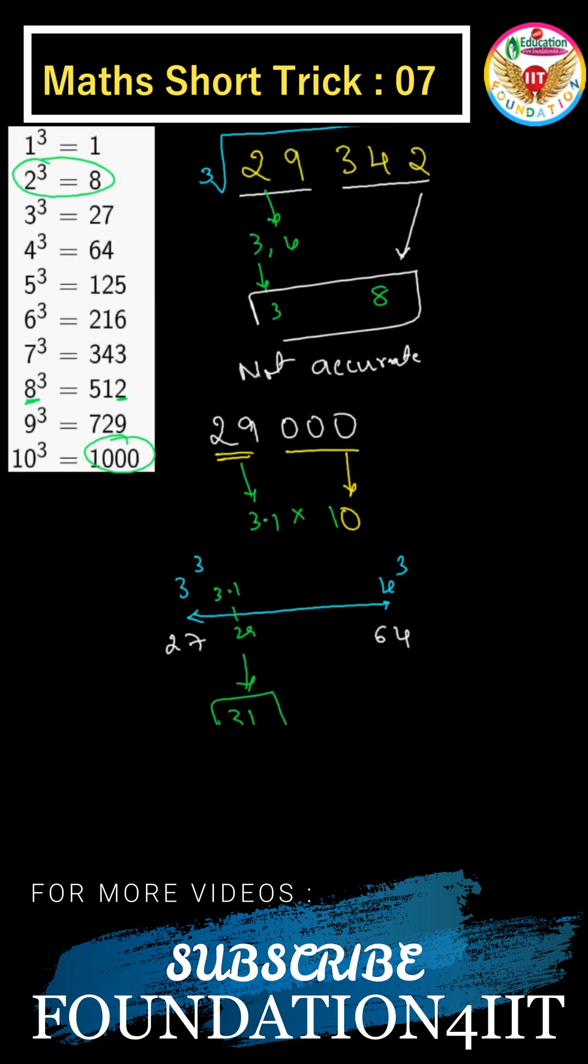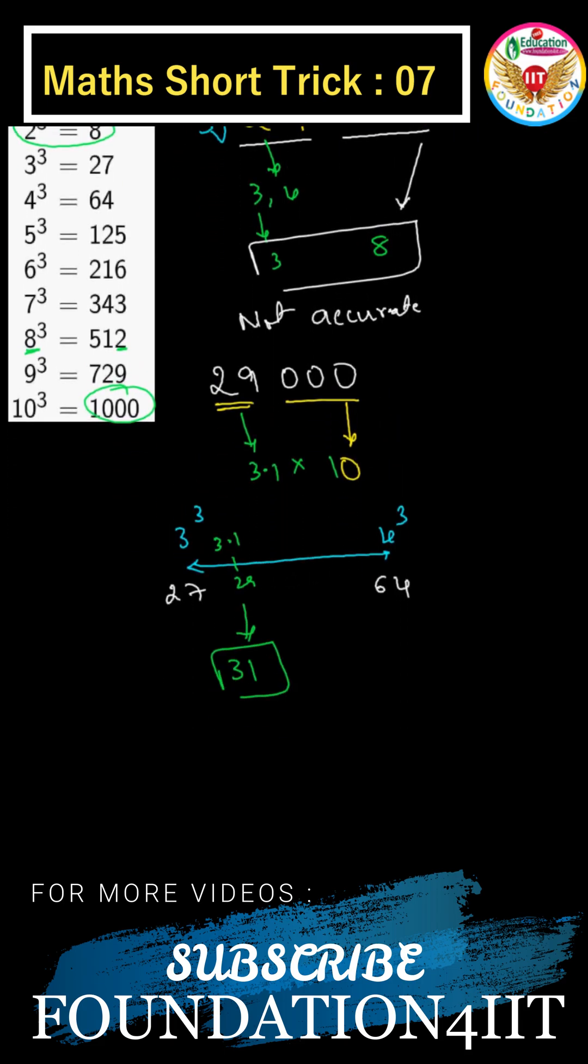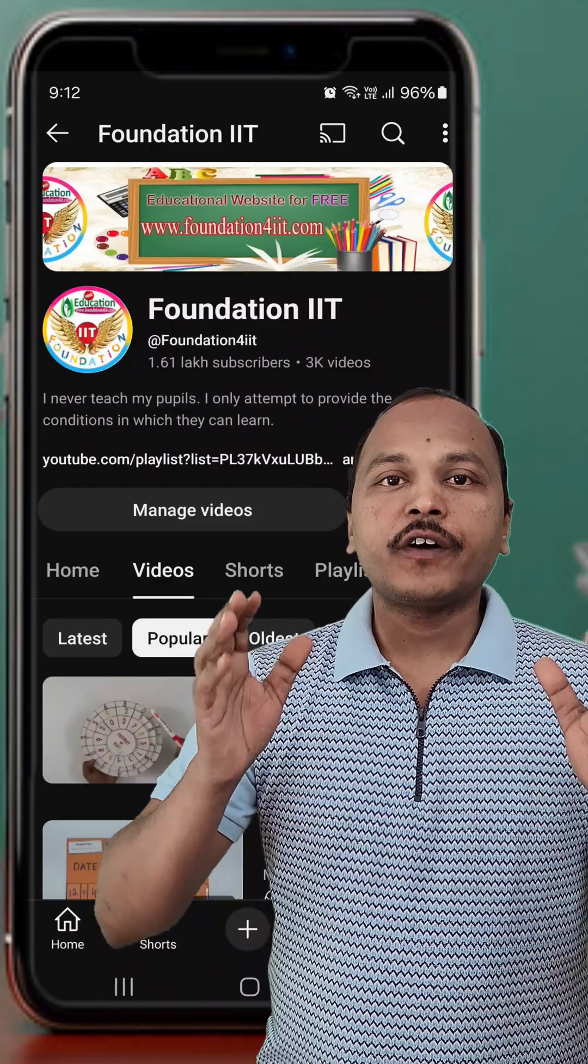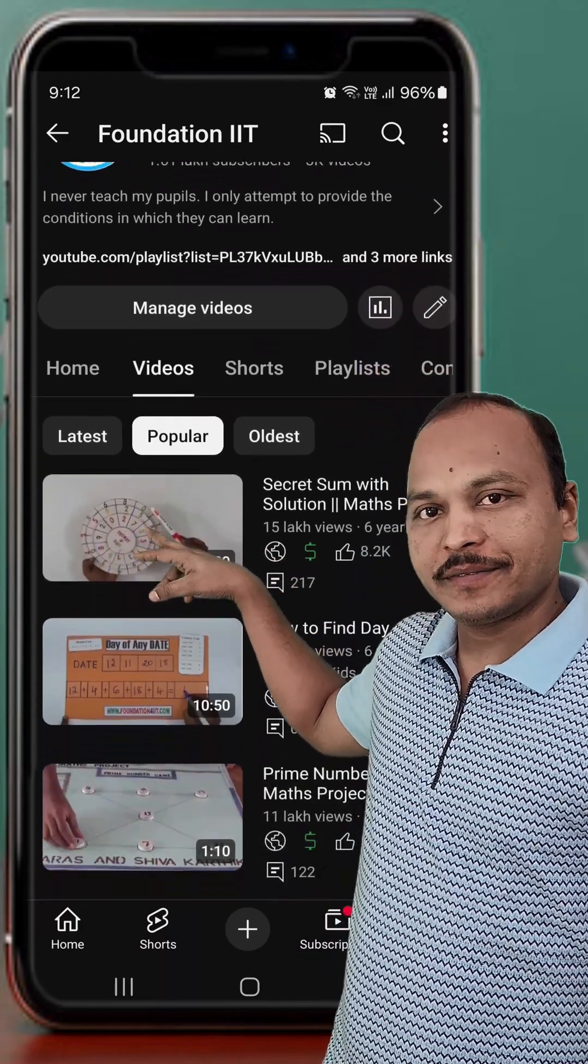31 is approximate cube root of this number instead of 38. Use this technique to find the answers easily. For more videos and other shortcut tricks, you can check from our channel. Thank you.